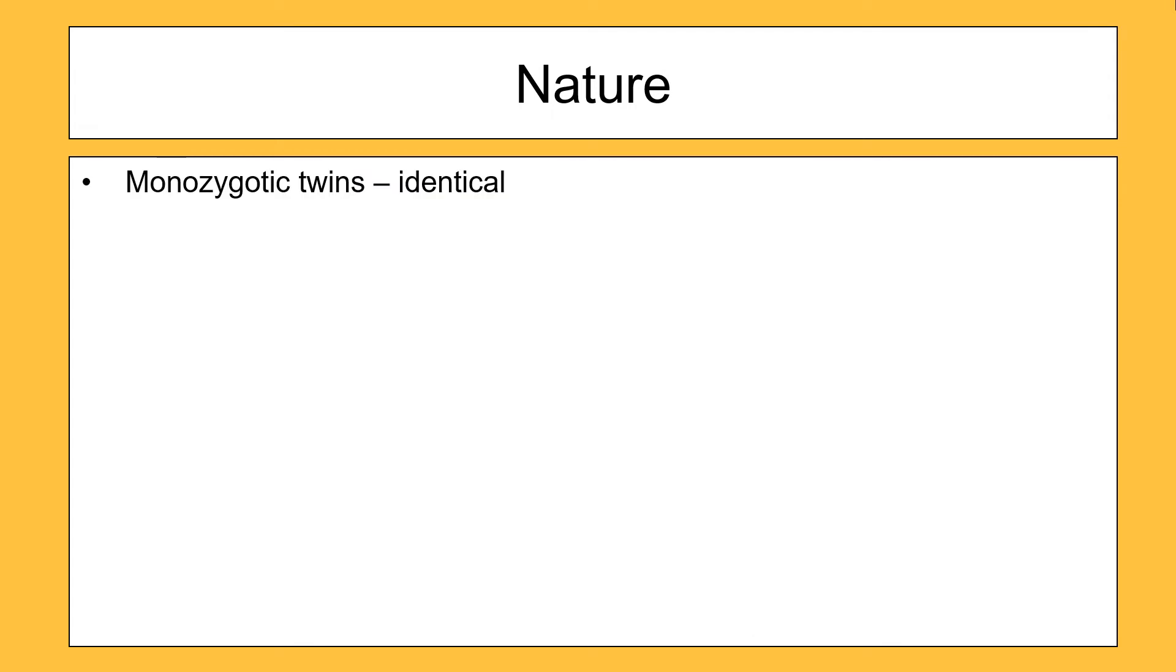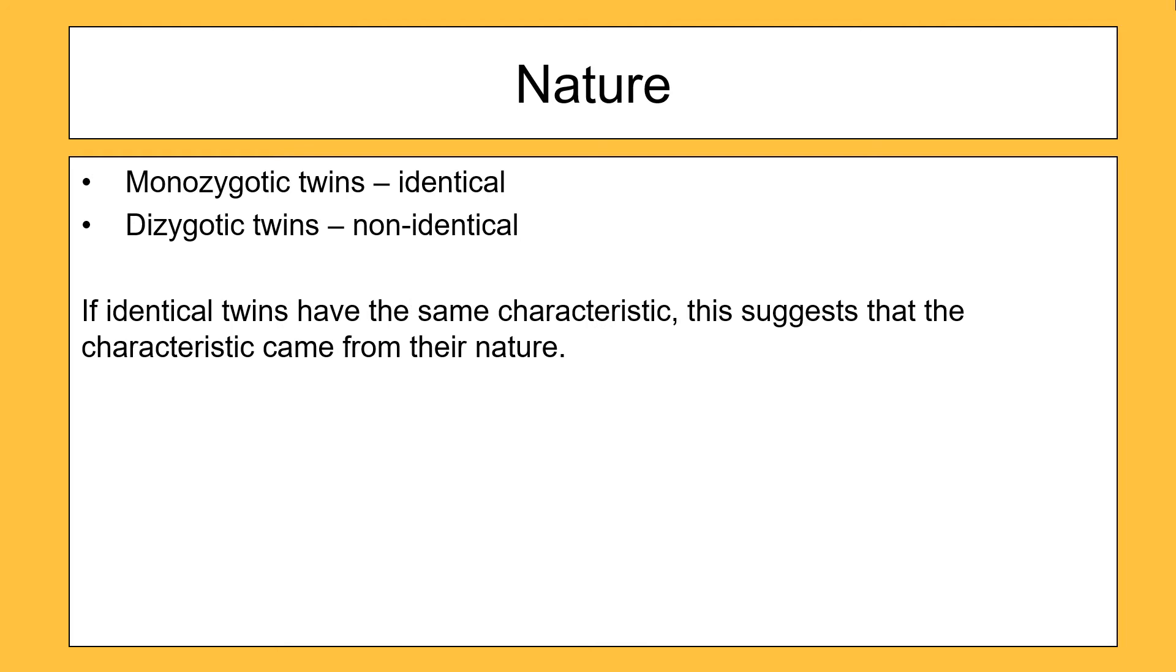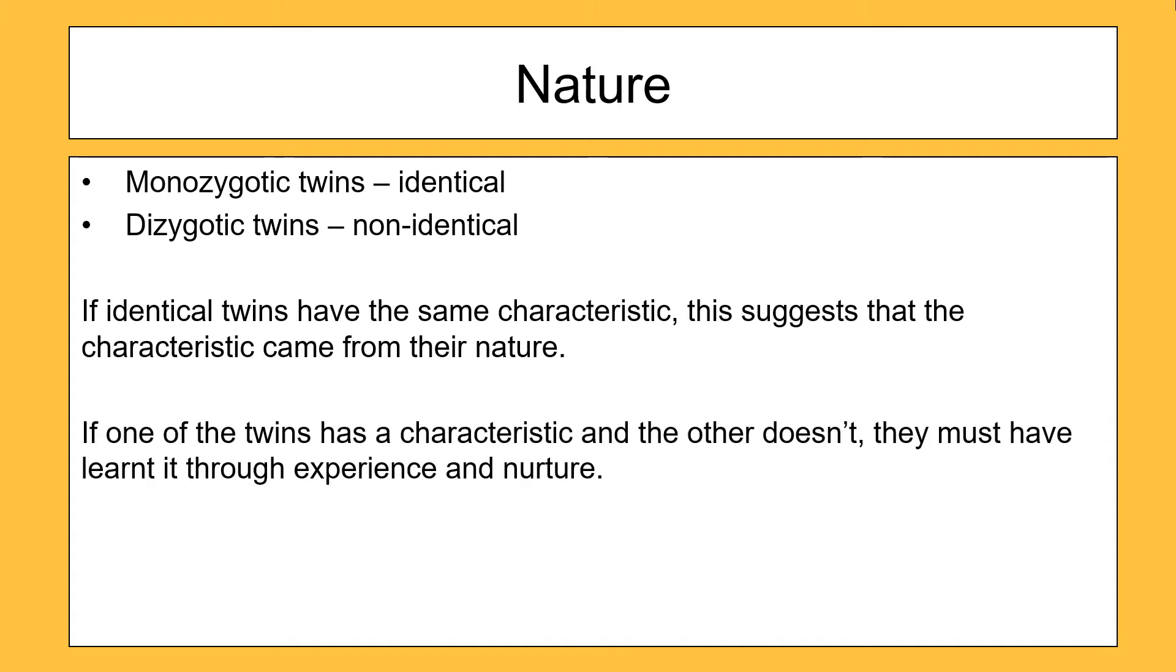The nature debate is supported by research into twins. So we have monozygotic and dizygotic twins, so identical and non-identical twins. The thing about identical twins is they have exactly the same genes. So psychologists have been researching them for a very long time. The idea behind researching them is this: if identical twins have the same characteristic, this suggests that the characteristic came from their nature. Because they've got exactly the same genes, exactly the same DNA, if they both do something, we strongly believe that comes from their DNA and therefore it's part of their nature. And then the argument continues. If one of the twins has a certain characteristic and the other one doesn't, then the argument is that this must have come through nurture, through experience and through a different upbringing. And that's basically the nature argument.